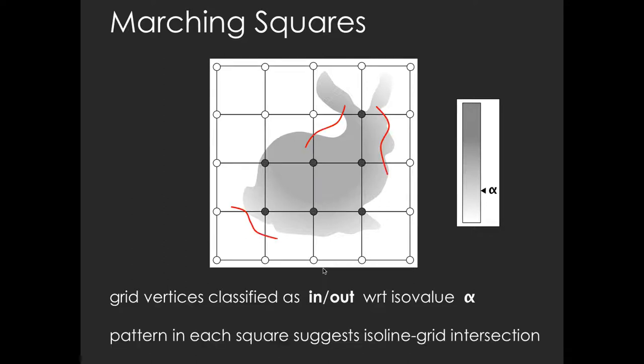The pattern of in-out assignments suggests how the ISO line intersects the grid cells, as shown in the examples here, since the ISO line and ISO surface effectively separate the dataset into an inside and an outside region. Finally, the patterns are used to guide the linear approximation to the ISO line.